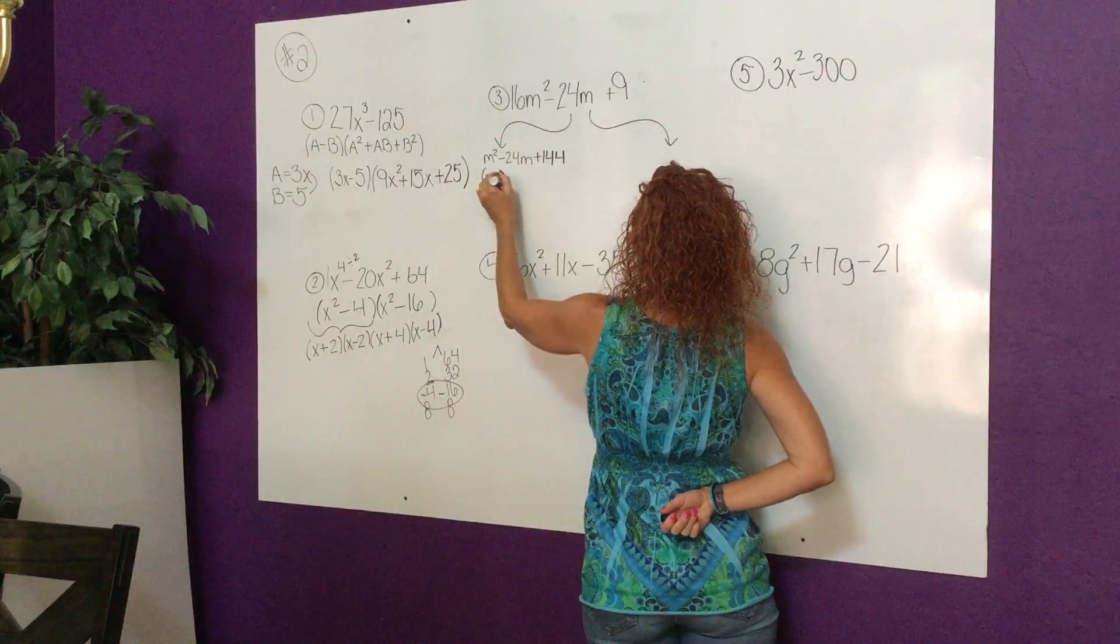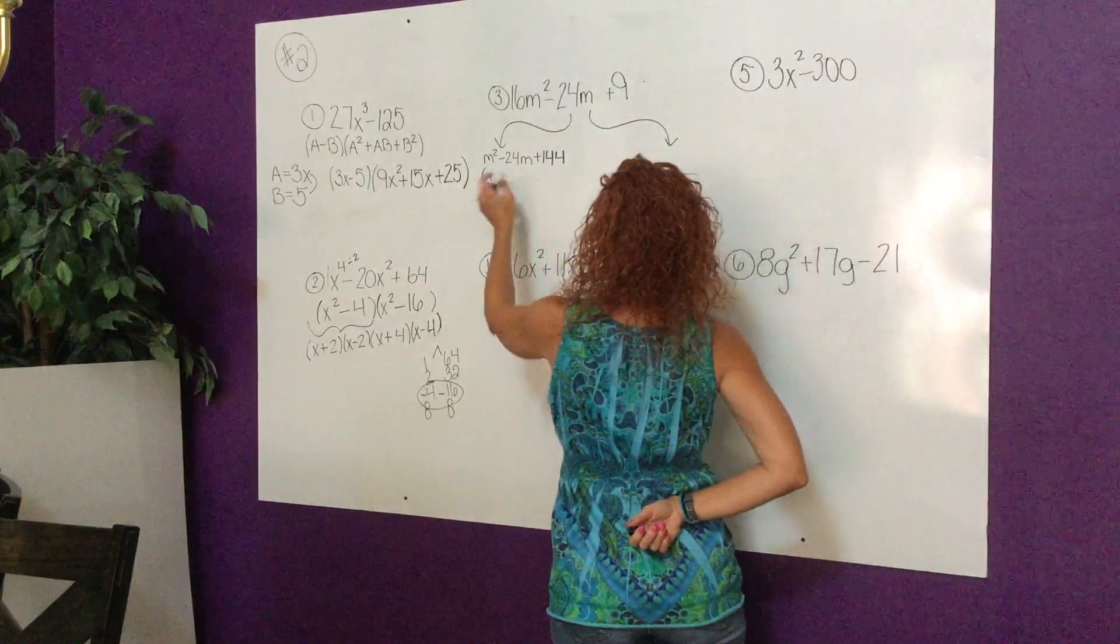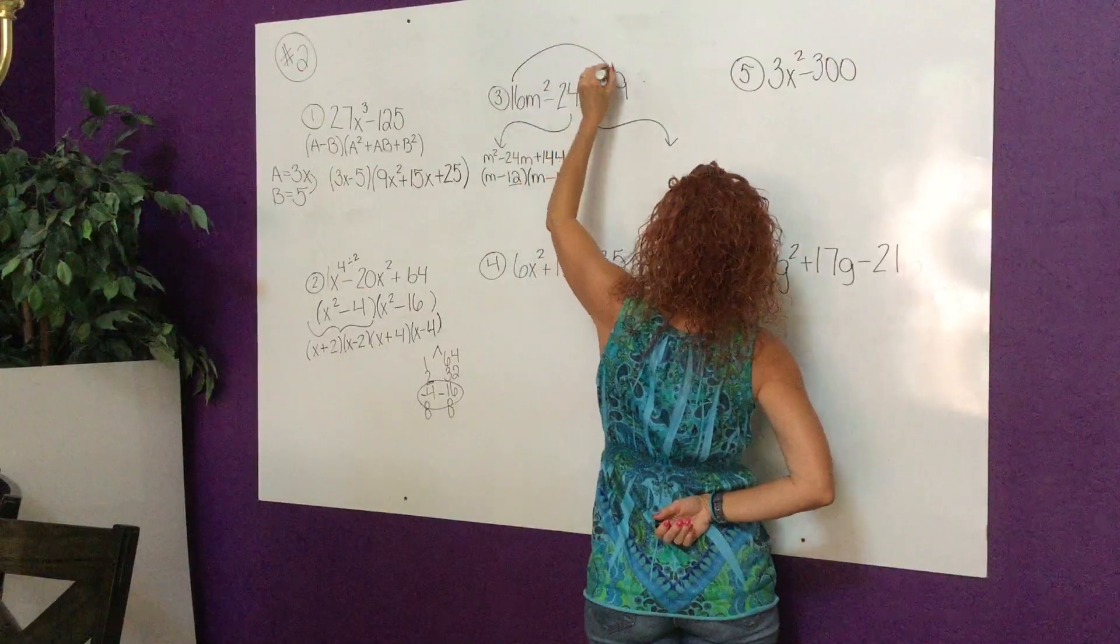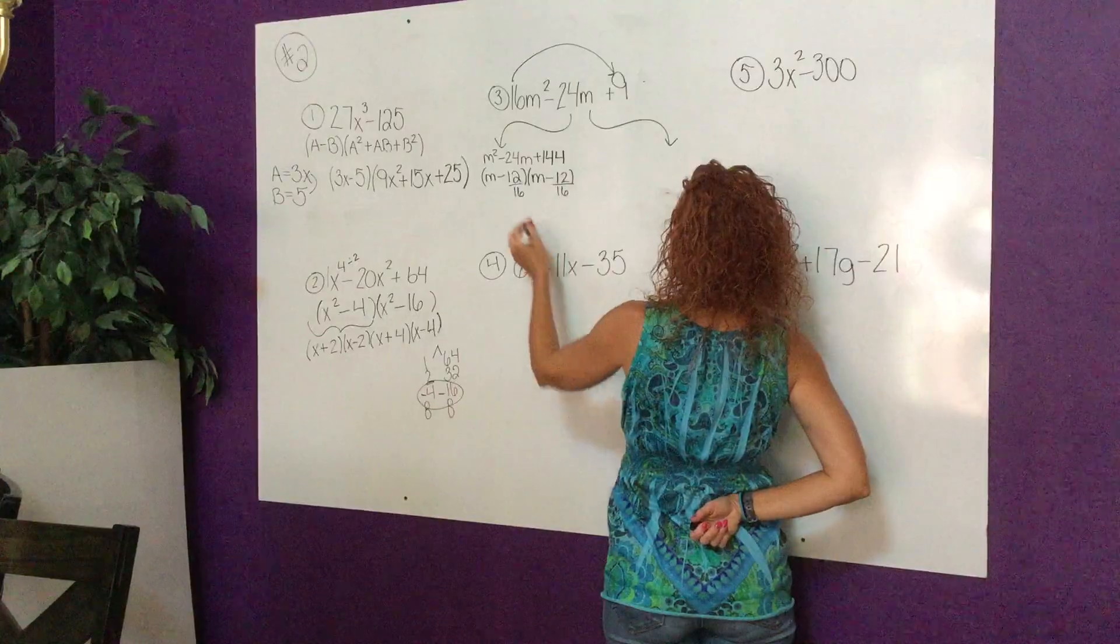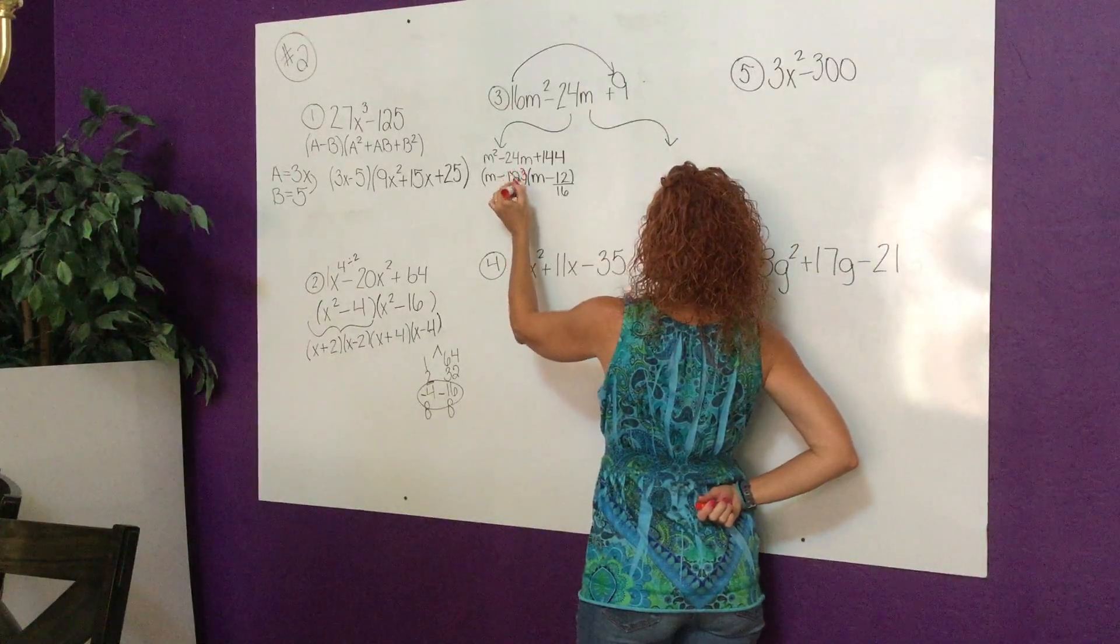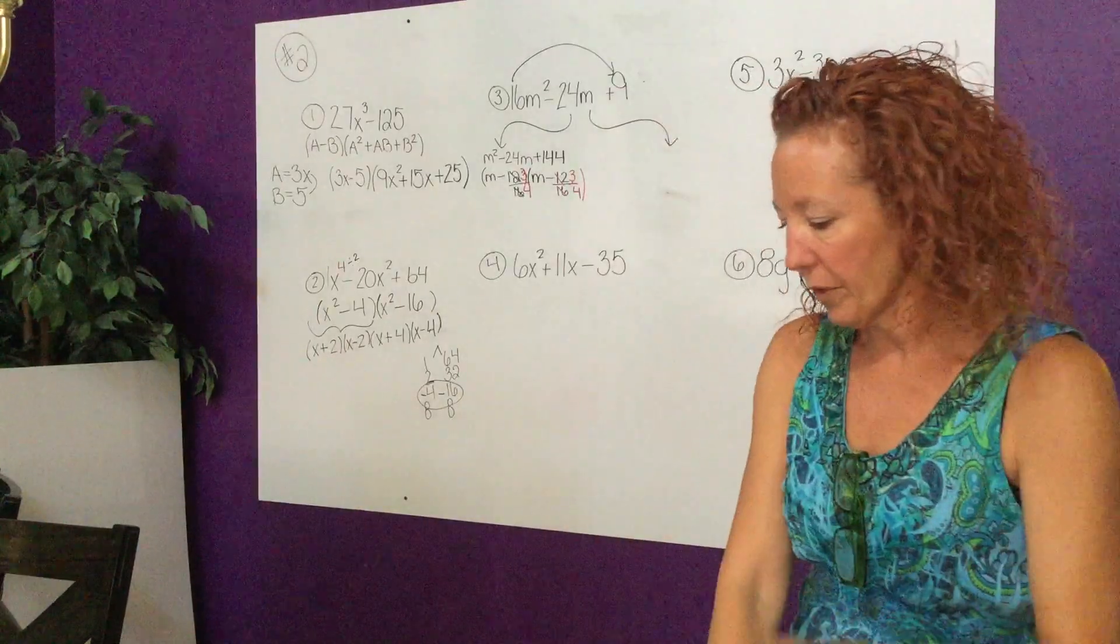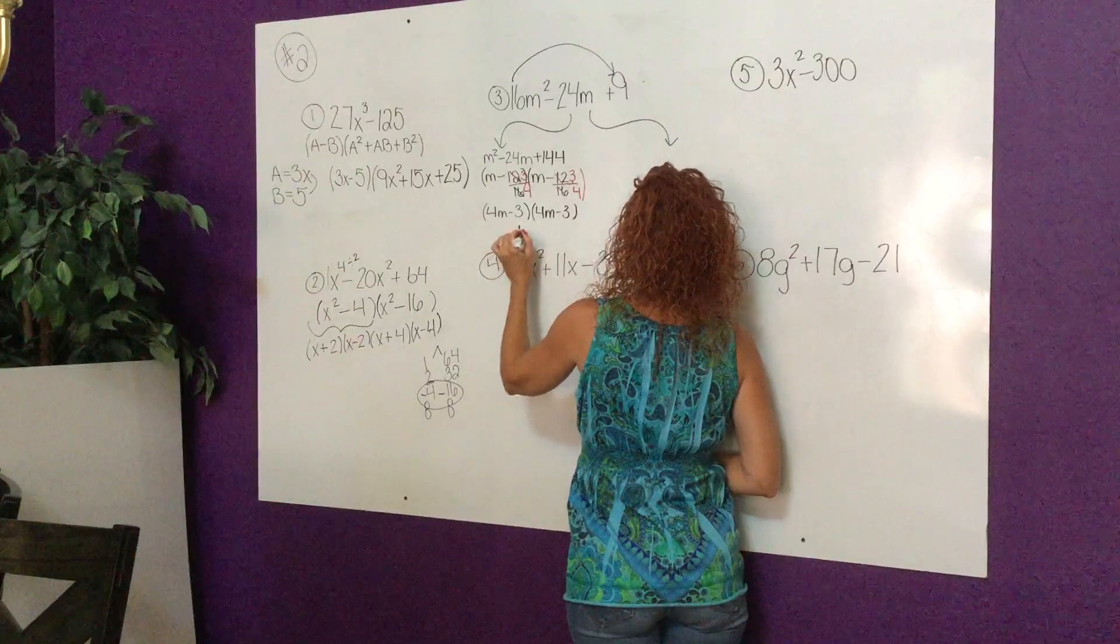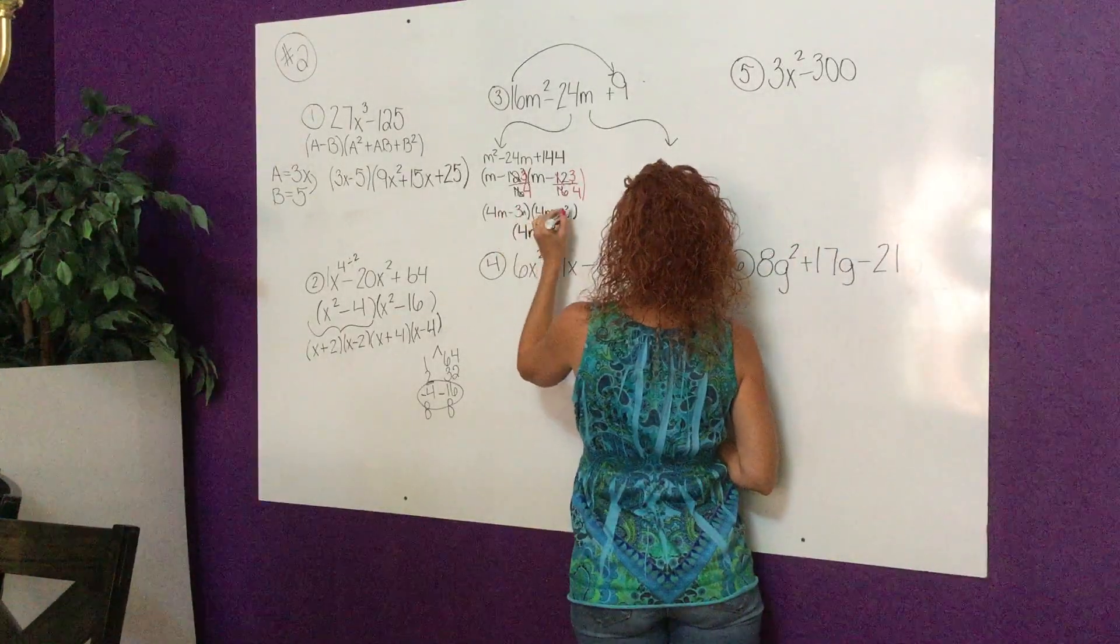Then I'm going to write m² - 24m, and 16 times 9 is 144. I can factor this so 144 has a lot of factors but I see that 12 and 12, because I know that 144 is a perfect square and 12 and 12 make 24. So minus 12 and minus 12. If I multiply the 16 in that first step I have to reverse it, and then I'm going to reduce. 12 over 16 reduces down to 3 fourths.